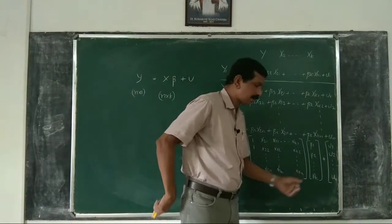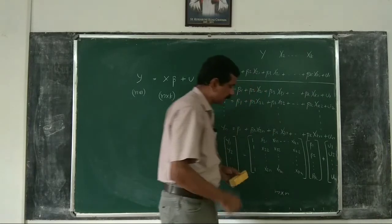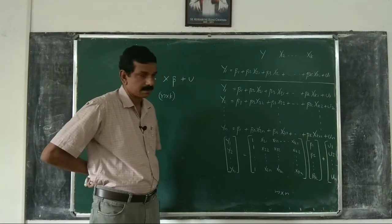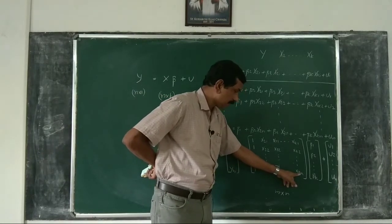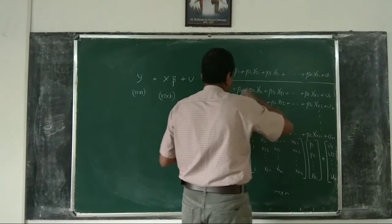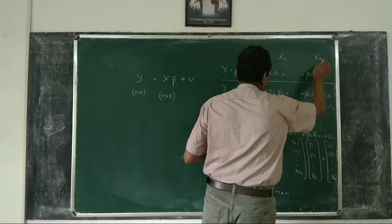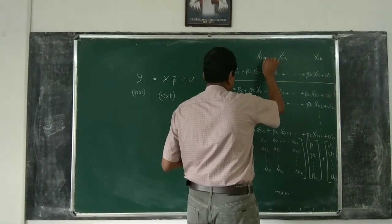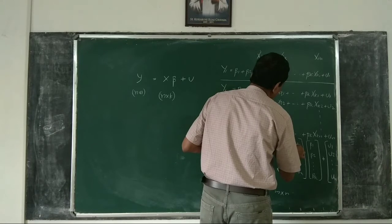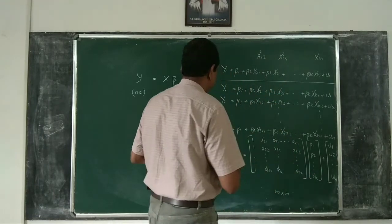Remember this: when we write a matrix of order m by n, m is the number of rows and n is the number of columns. So with that convention, k will be the number of columns. This is because we specify variables as xi2, xi3, ..., xik, which becomes x12, x13, ..., x1k, x2k, etc., up to xnk. So X has order n by k.